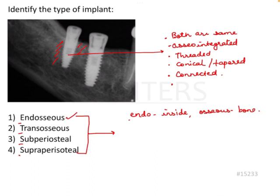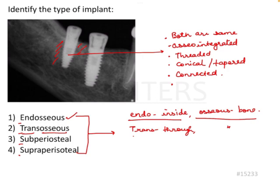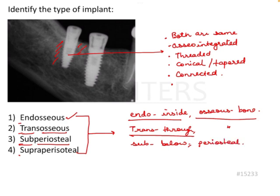Second is transosseous implant. 'Trans' means through, 'osseus' means bone — so does it pass through the bone? We can't fully gauge from one IOPA, so we'll look at this more carefully. Subperiosteal implant: 'sub' means below, 'periosteal' refers to the periosteum. Is it below the periosteum? The periosteum is here, so these are definitely not below the periosteum.